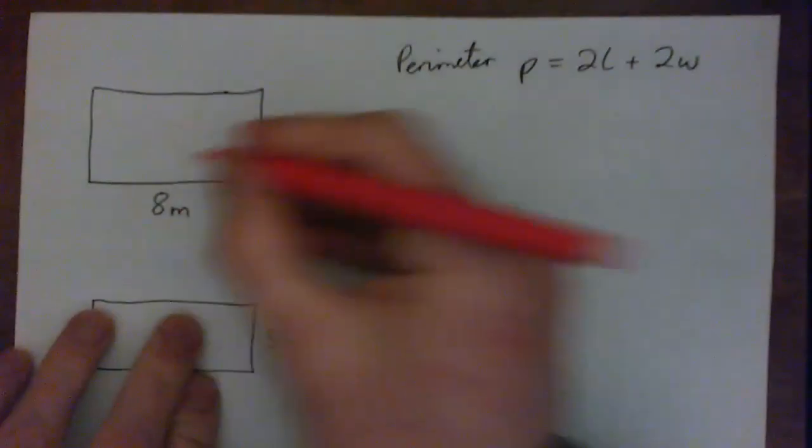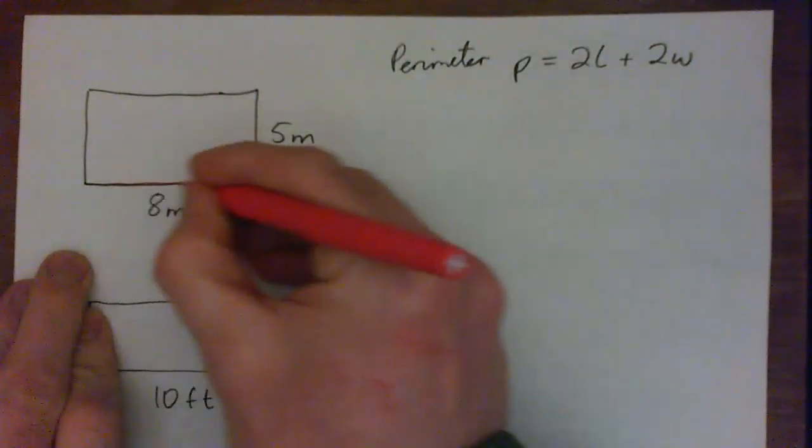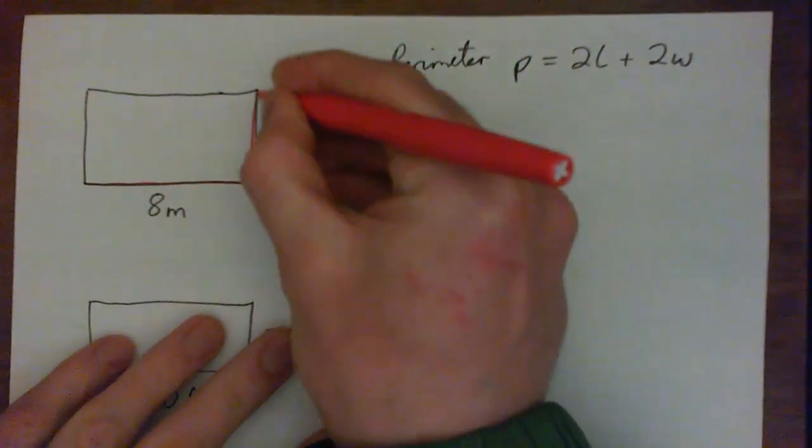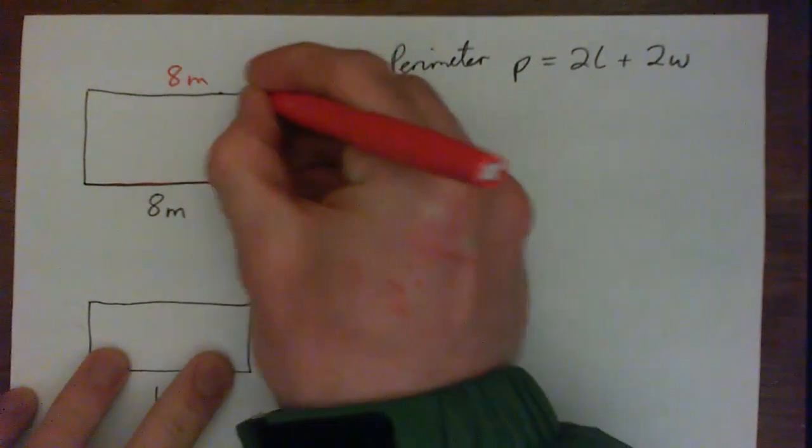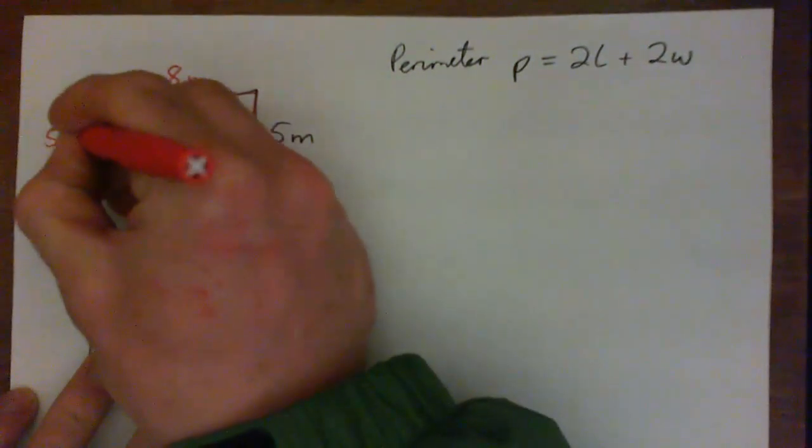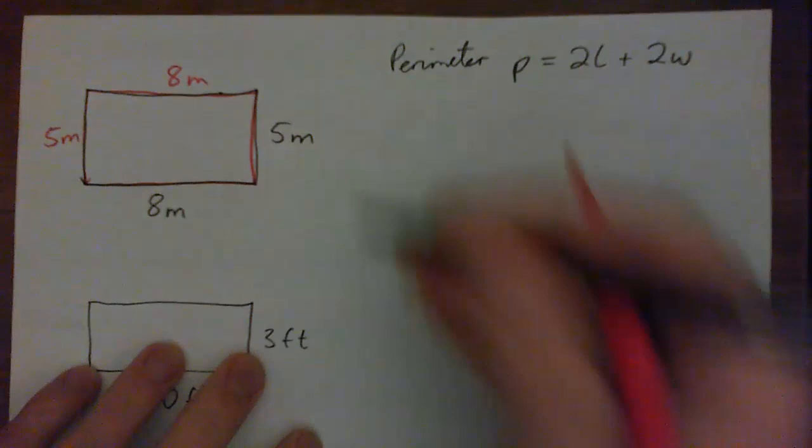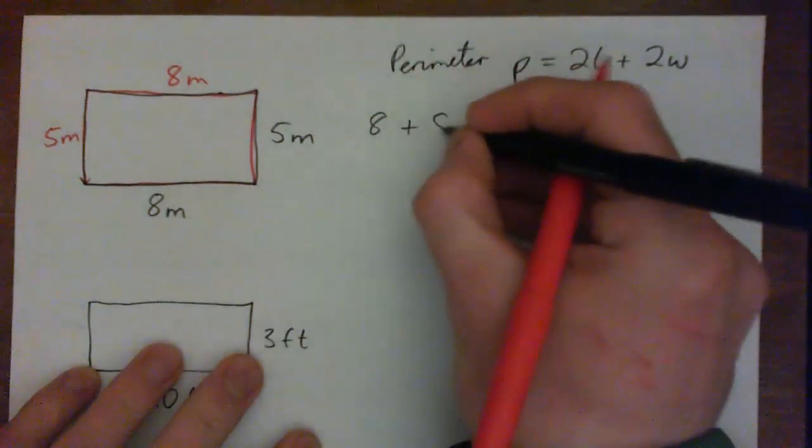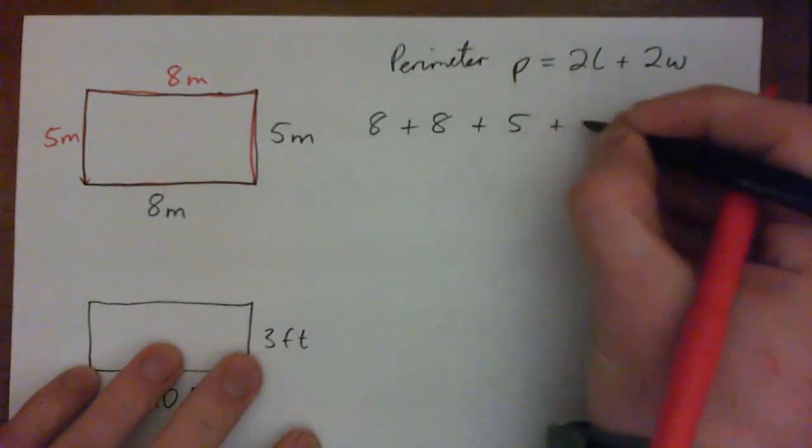The length around the outside. So the length around the outside is 8 meters plus 5 meters plus another 8 meters, plus another 5 meters. So the perimeter is actually 8 plus 8 plus 5 plus 5.